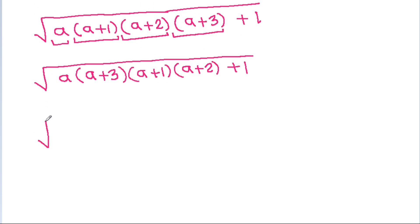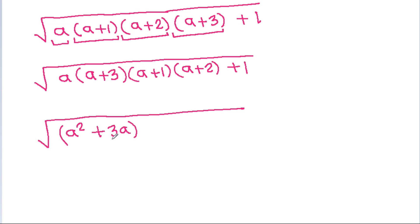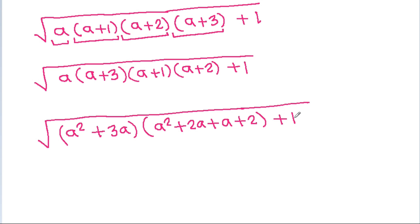Under the square root, a times a plus 3 will be a squared plus 3a. And a times a is a squared, and a times 2 is 2a, and 1 times a is a, and 1 times 2 is 2, plus 1.